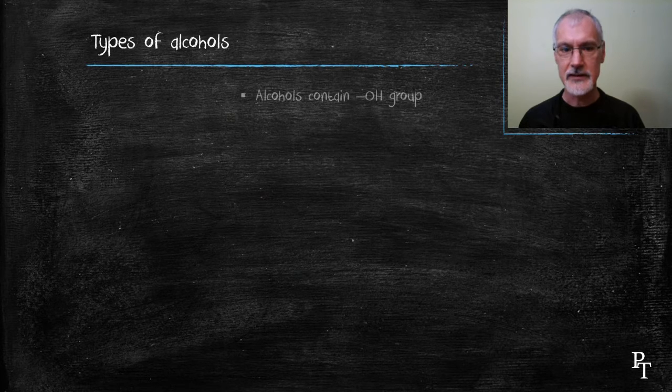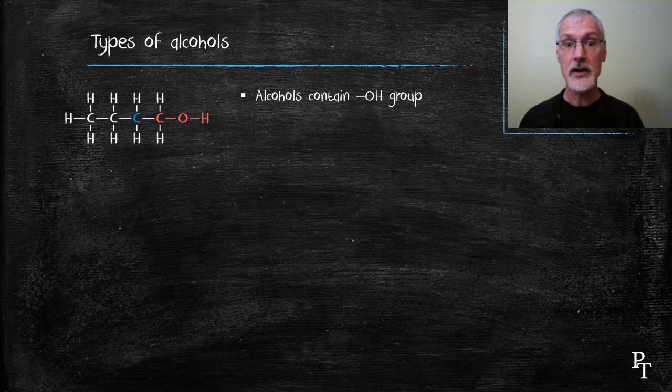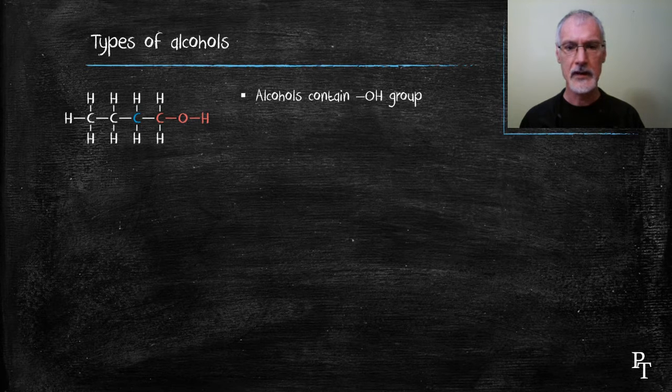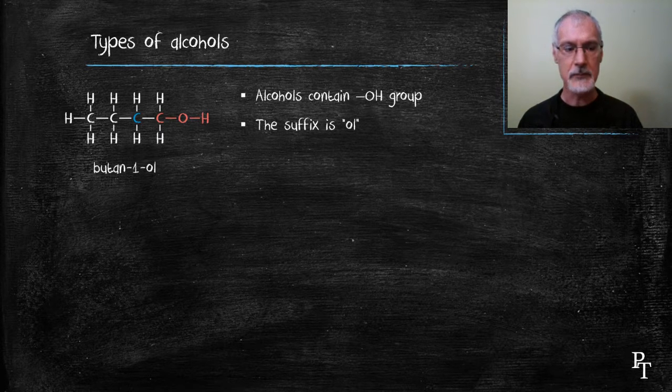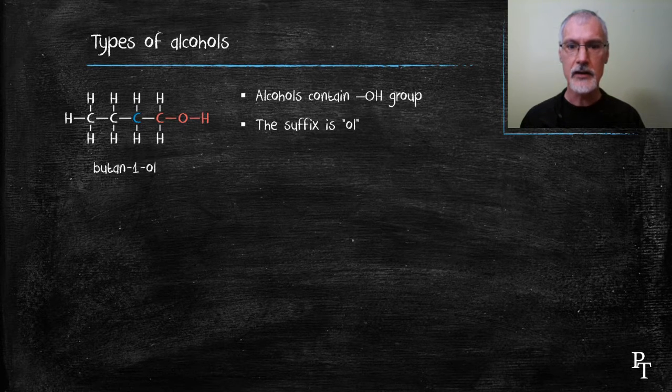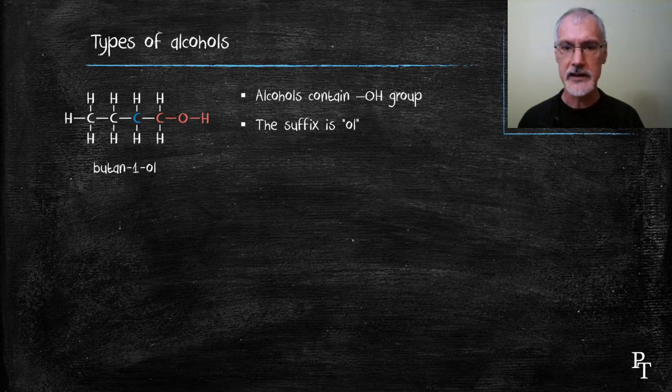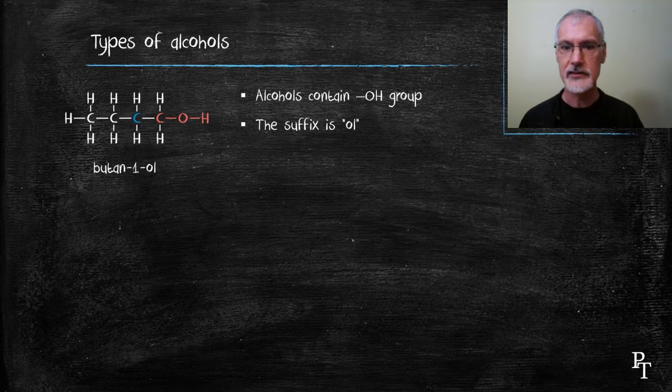First off, let's look at the properties of alcohols. Their functional group, they all contain the OH group. You name alcohols by adding -ol to the end of the name, and also you give the address of where the alcohol is. Here, 1-butanol indicates that the alcohol group is attached to the first carbon.